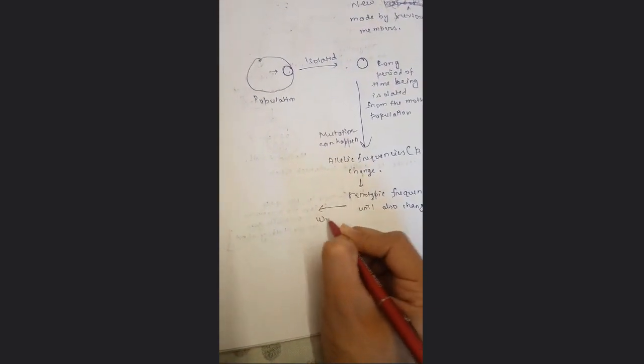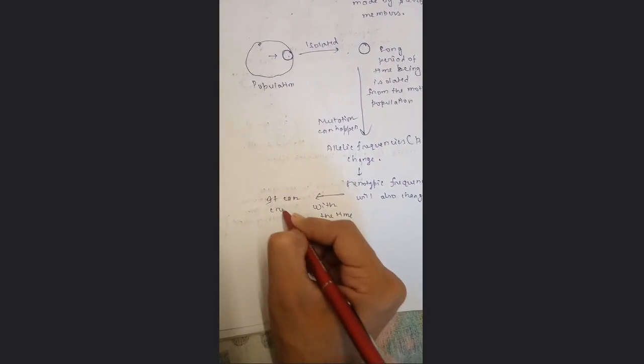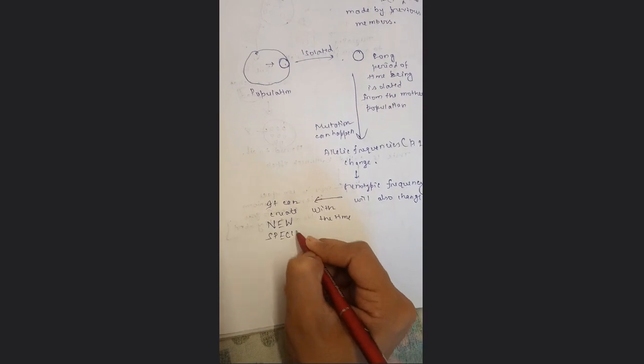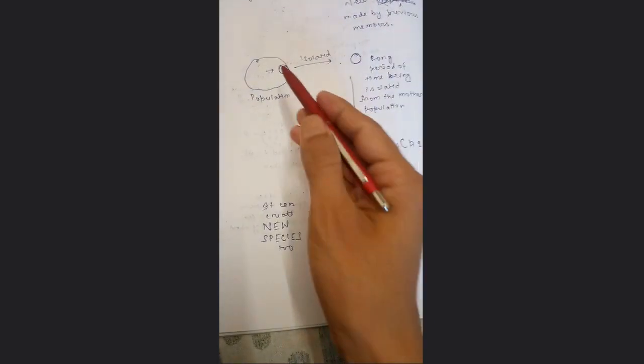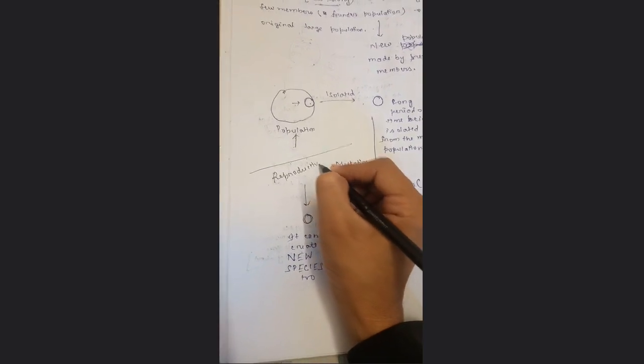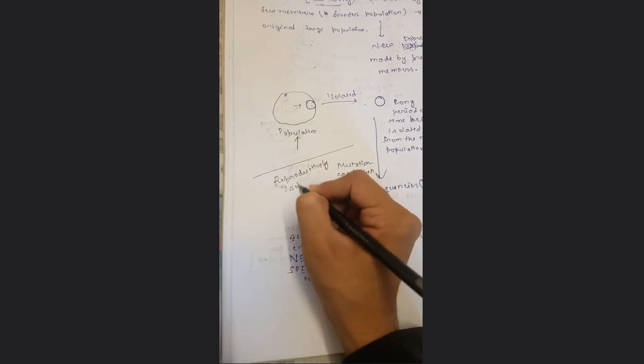Because mutations happen, allelic frequencies — P, Q, etc. — change, and as a result genotypic frequencies also change. Over time, this can create new species, because with so many mutations there will be selection and migration, causing this isolated population to become reproductively isolated from the parental or mother population — this is speciation.